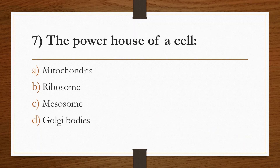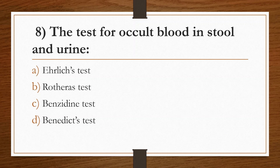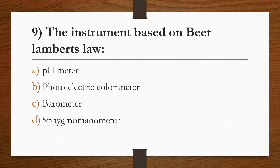Seventh question: the powerhouse of a cell. Option A: mitochondria. Option B: ribosome. Option C: mesosome. Option D: Golgi bodies. Answer is Option A, mitochondria. Eighth question: the test for occult blood in stool and urine. Option A: Ehrlich's test. Option B: Rothera's test. Option C: Benzidine test. Option D: Benedict's test. Answer is Option C, Benzidine test. Ehrlich's test is used for the detection of urobilinogen. Rothera's test is used for the detection of ketone bodies. Benedict's test is used for the detection of reducing sugar in urine. Ninth question: the instrument based on Beer-Lambert's law. Option A: pH meter. Option B: Photoelectric colorimeter. Option C: Barometer. Option D: Sphygmomanometer.